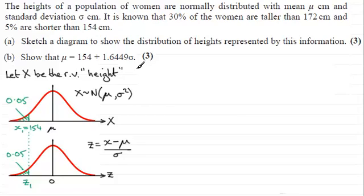Then we've got, just come down here, we've got our value Z1 must be equal to the observed value which is 154 minus the mean mu all divided by the standard deviation sigma.